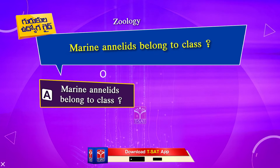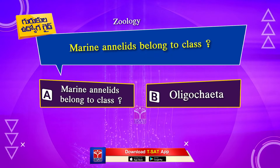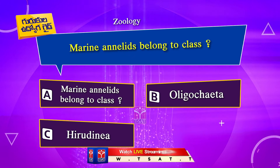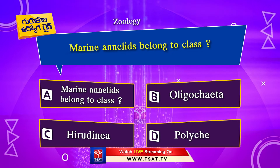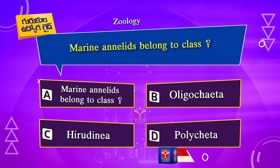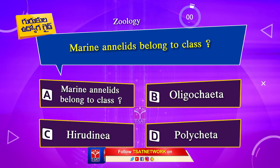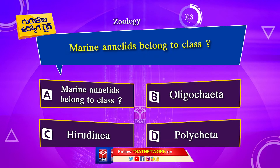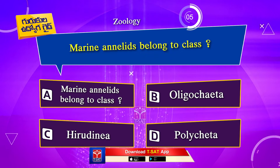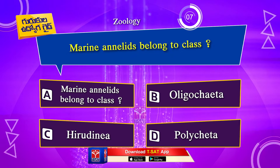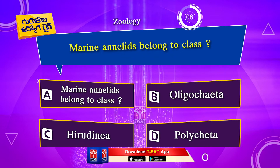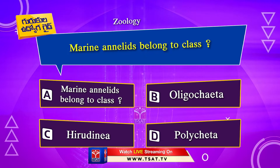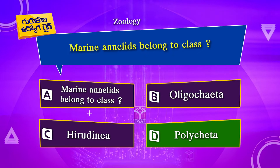Next question. Marine annelids belong to class: Option A. Ketopoda. Option B. Oligochaeta. Option C. Hirudinea. Option D. Polychaeta. The correct answer is Option D. Polychaeta.